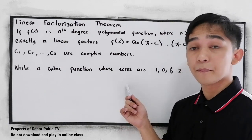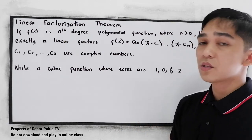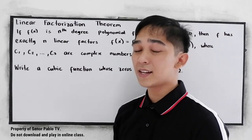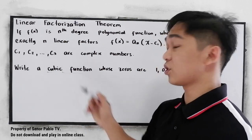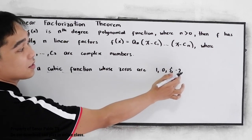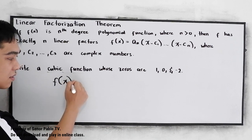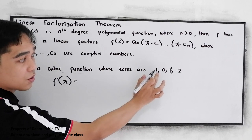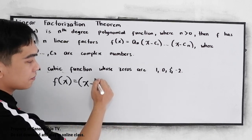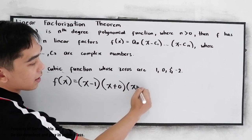Now, to better understand, let's have this problem: write a cubic function whose zeros are 1, 0, and negative 2. So take note, in our theorem we have linear factorization. Let us find the factors, then we're going to find the cubic function. So the cubic function f of x is equal to: x minus 1, times x plus 0, and x plus 2.